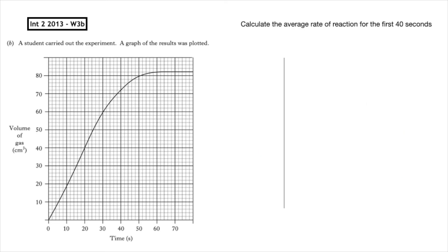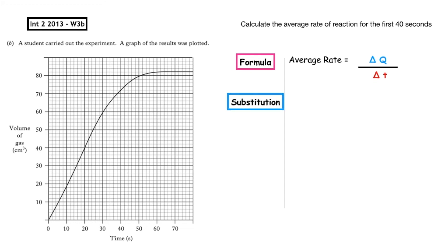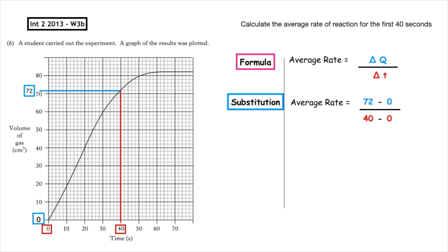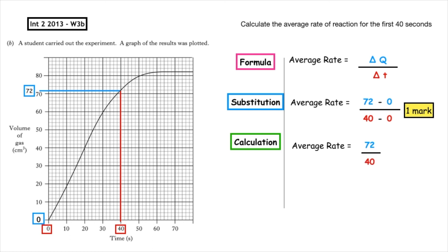This past paper question is from the Intermediate 2, 2013, written 3b. A student carried out the experiment and the graph of the results was plotted. Calculate the average rate of reaction for the first 40 seconds. Write out the formula: average rate equals change in quantity over change in time. Substitute — the first 40 seconds gives 40 minus 0 on the bottom. Put a box around 40 and 0 on the x-axis, draw a line to the curve, and extrapolate to the y-axis to get 72 minus 0 on the top. That gives 72 divided by 40, which equals 1.8.